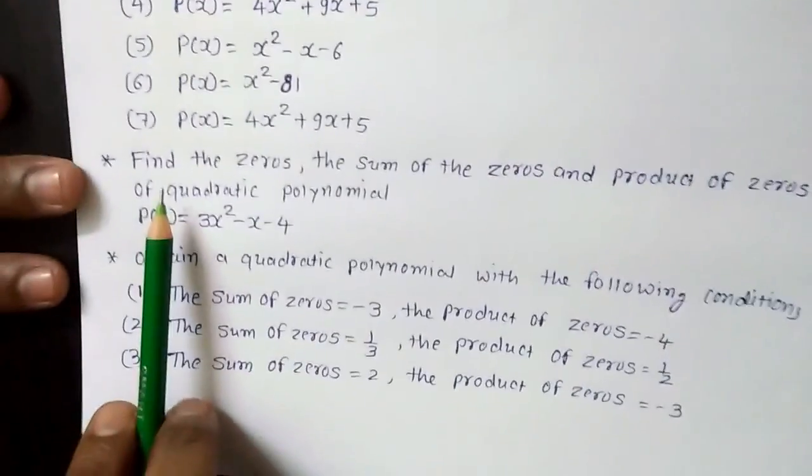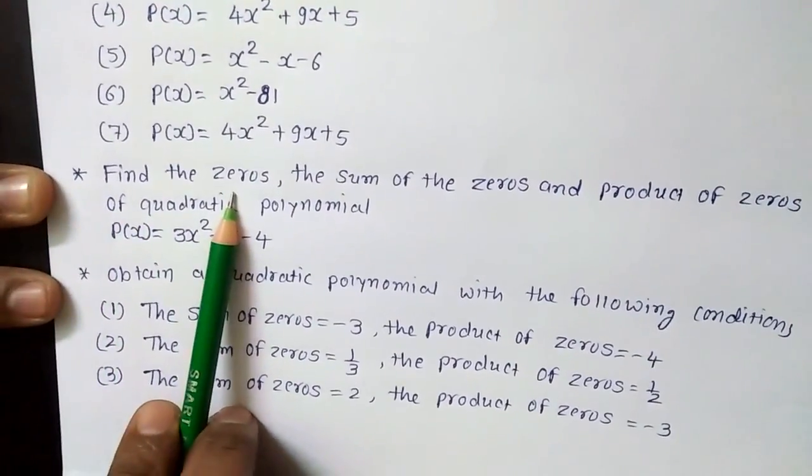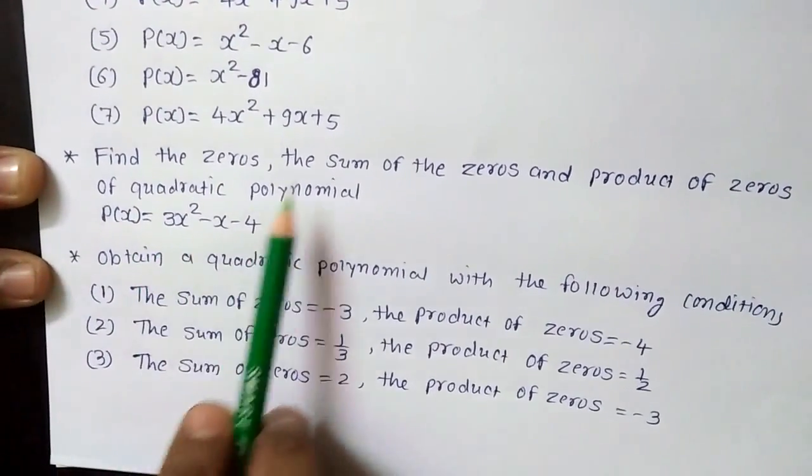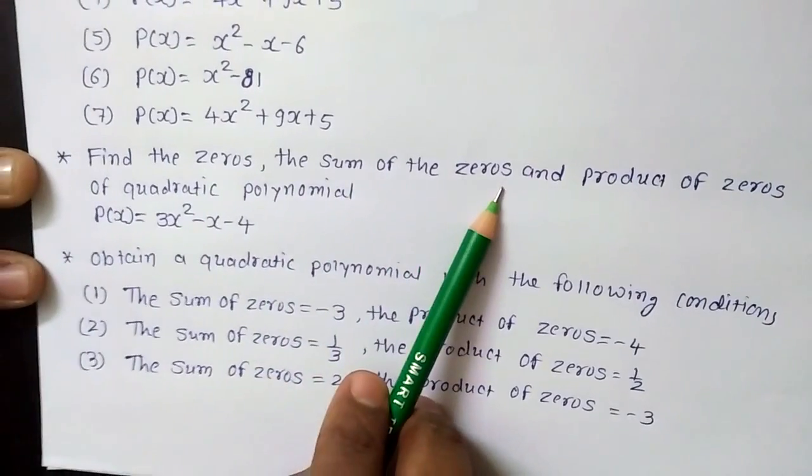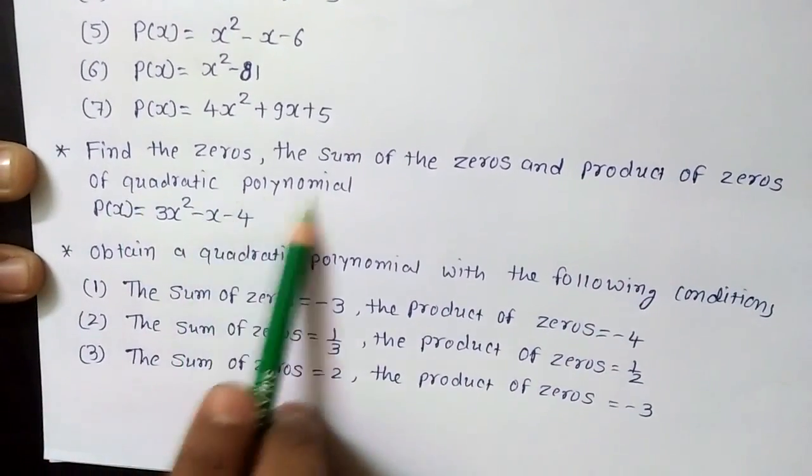Second question, find the zeros of the given polynomial, the sum of the zeros and the product of the zeros of the quadratic polynomial.